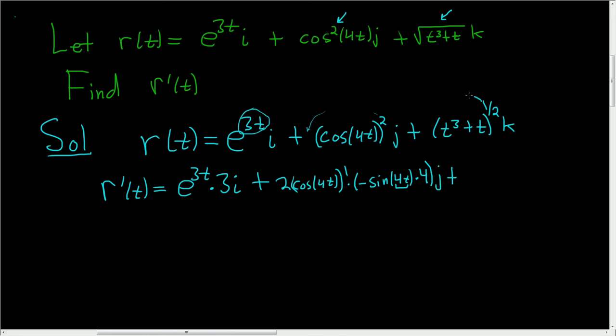Plus, here we'll bring the 1 half down, so we get 1 half t cubed plus t to the negative 1 half, times the derivative of the inside via the chain rule. So 3t squared plus 1k.